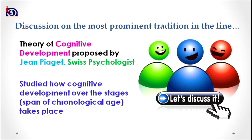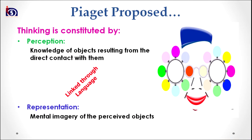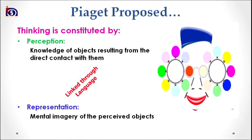Piaget proposed that thinking is constituted by two things. The first is perception, which can be referred to as the knowledge of objects resulting from direct contact with them. The second is representation, which can be referred to as mental imageries of the perceived object. Perception and representations are linked through language. Language is a basic tool which links perception and representation and helps us in learning, understanding, and looking at the world in the way we do.